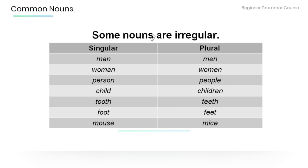Here are some nouns that are irregular. For example: the singular man becomes men in the plural; woman → women; person → people; child → children; tooth → teeth; foot → feet; mouse → mice.